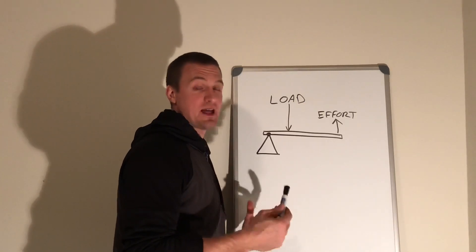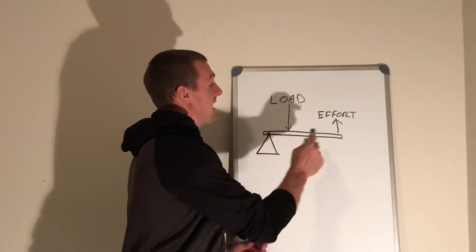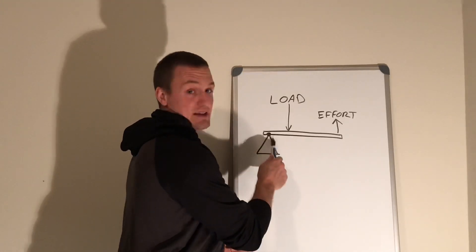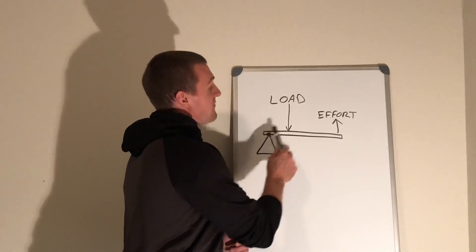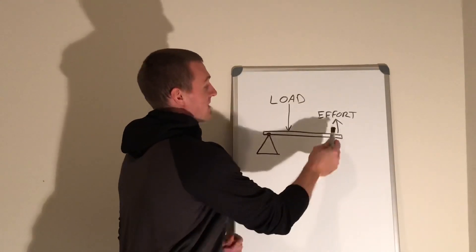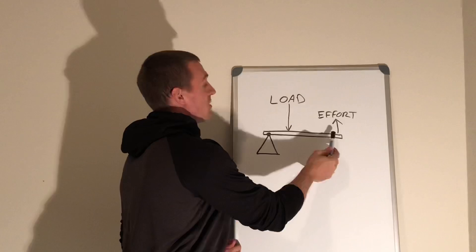We call a lever second class when the load and the effort are applied on the same side of the fulcrum or the axis of rotation, with the effort being further from the axis. The effort has a mechanical advantage because it has more leverage.